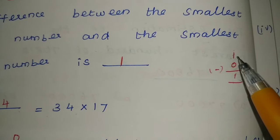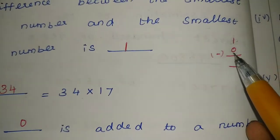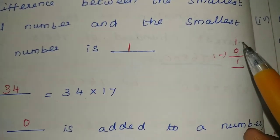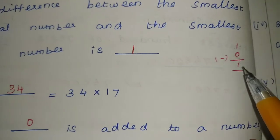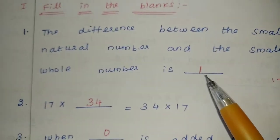Smallest natural number is 1, whole number is 0. So 1 minus 0, the difference is 1. The answer is 1. Okay?